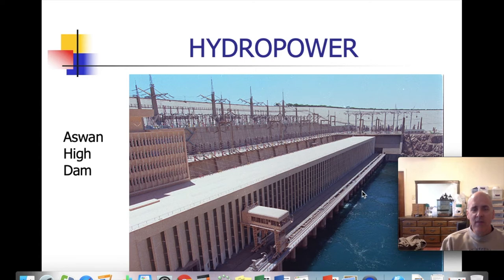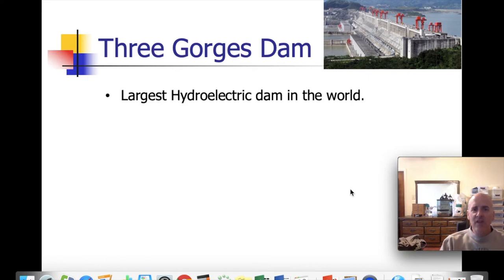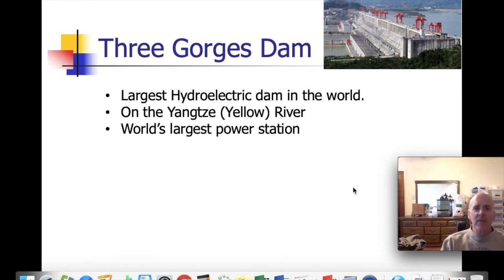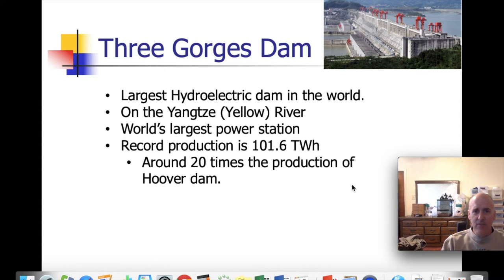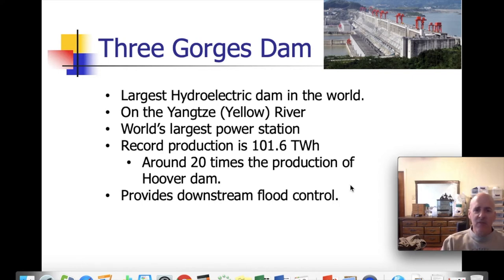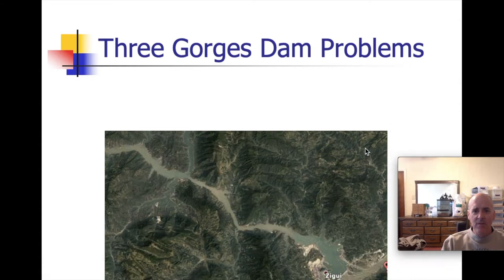The Three Gorges Dam is a relatively new and controversial dam on the Yangtze River in China. It's the largest hydroelectric dam in the world and the world's largest power station of any kind. Its record production was 101.6 terawatt hours — 20 times the production of Hoover Dam. In addition to electricity, it provides downstream flood control, but you can see from images how much wider the river is now, with formerly narrow streams turned into big lakes.